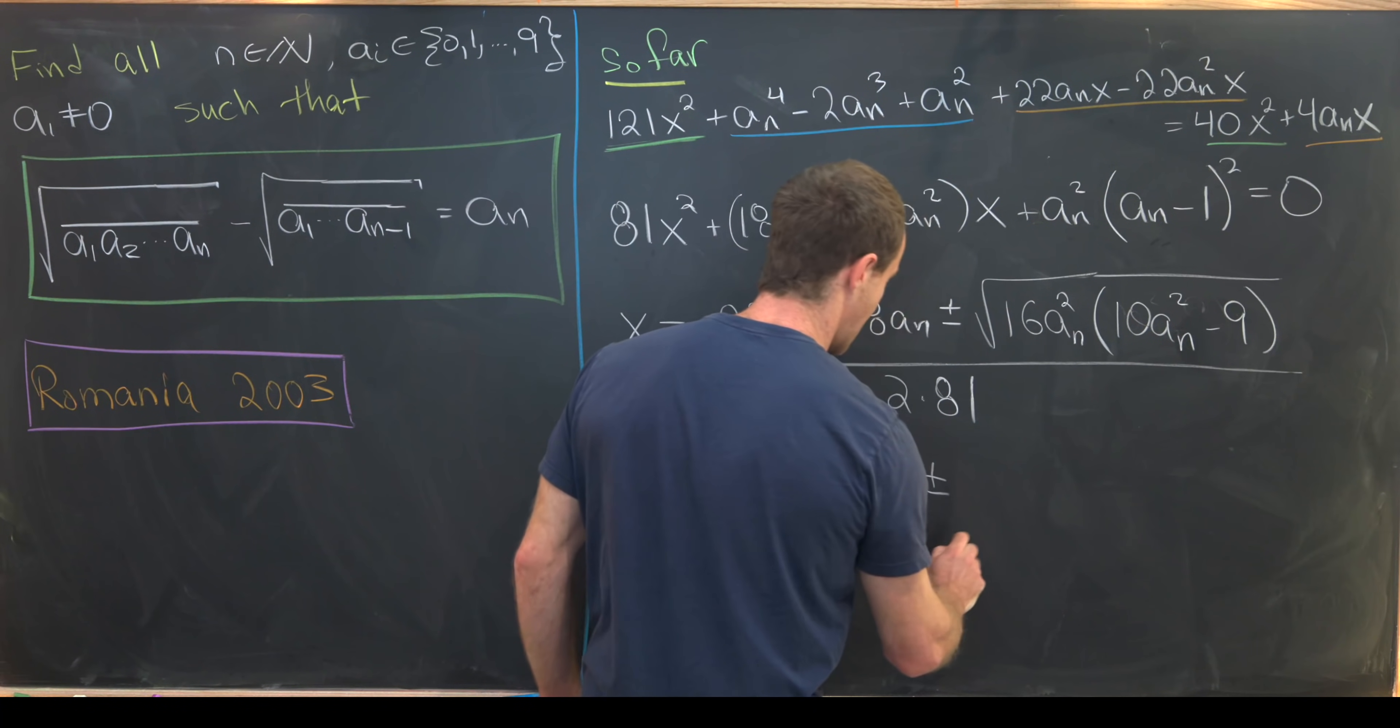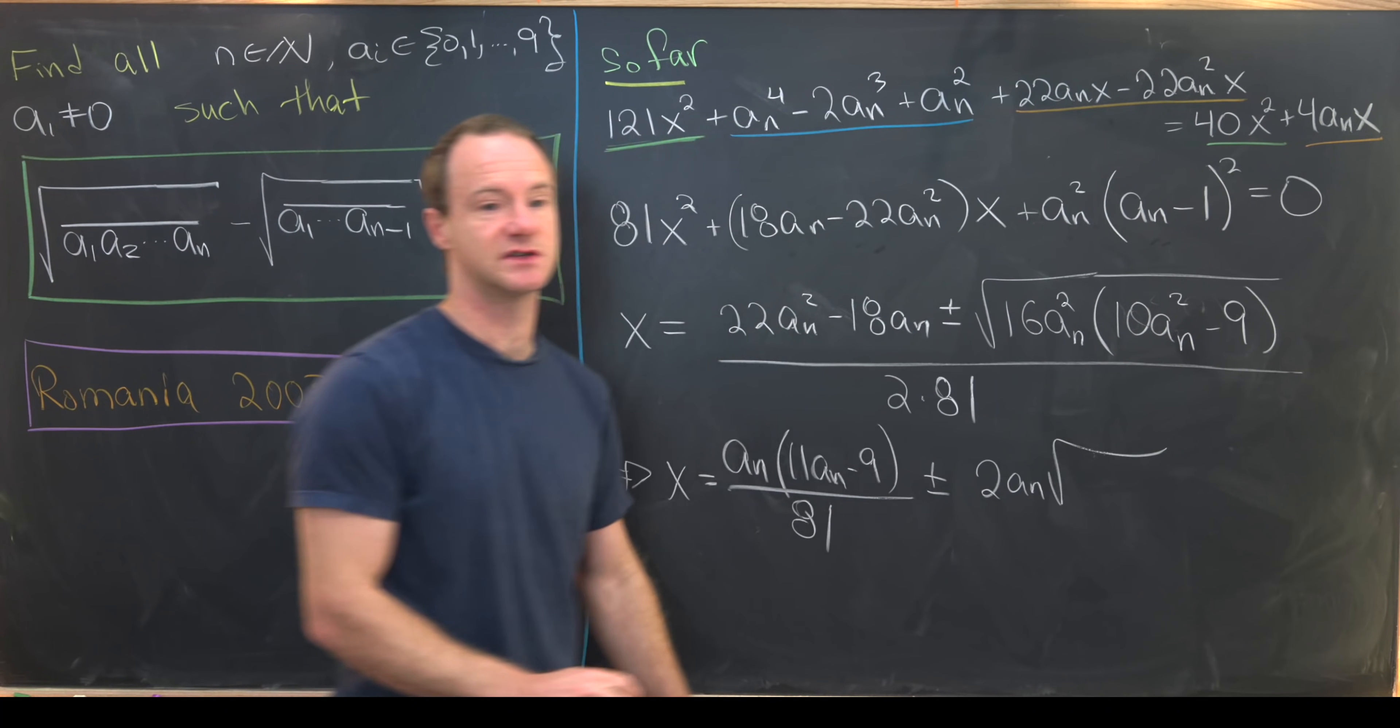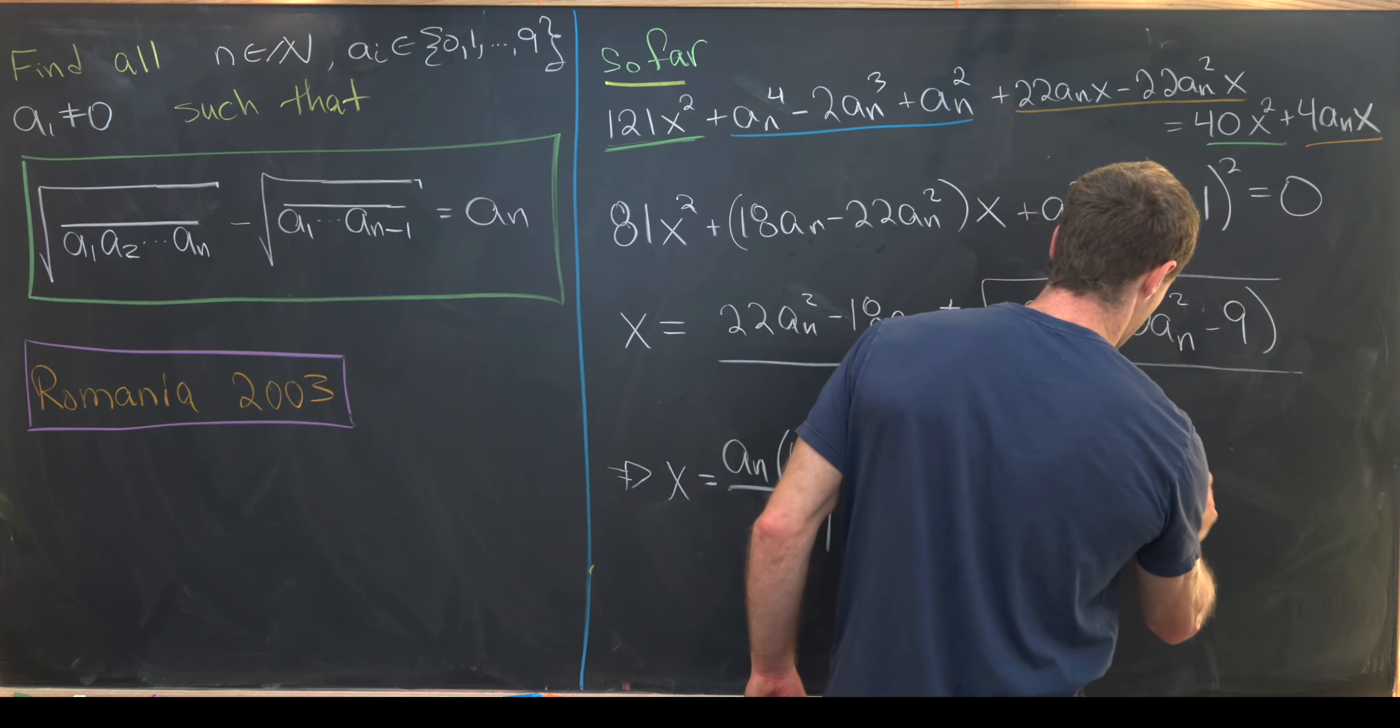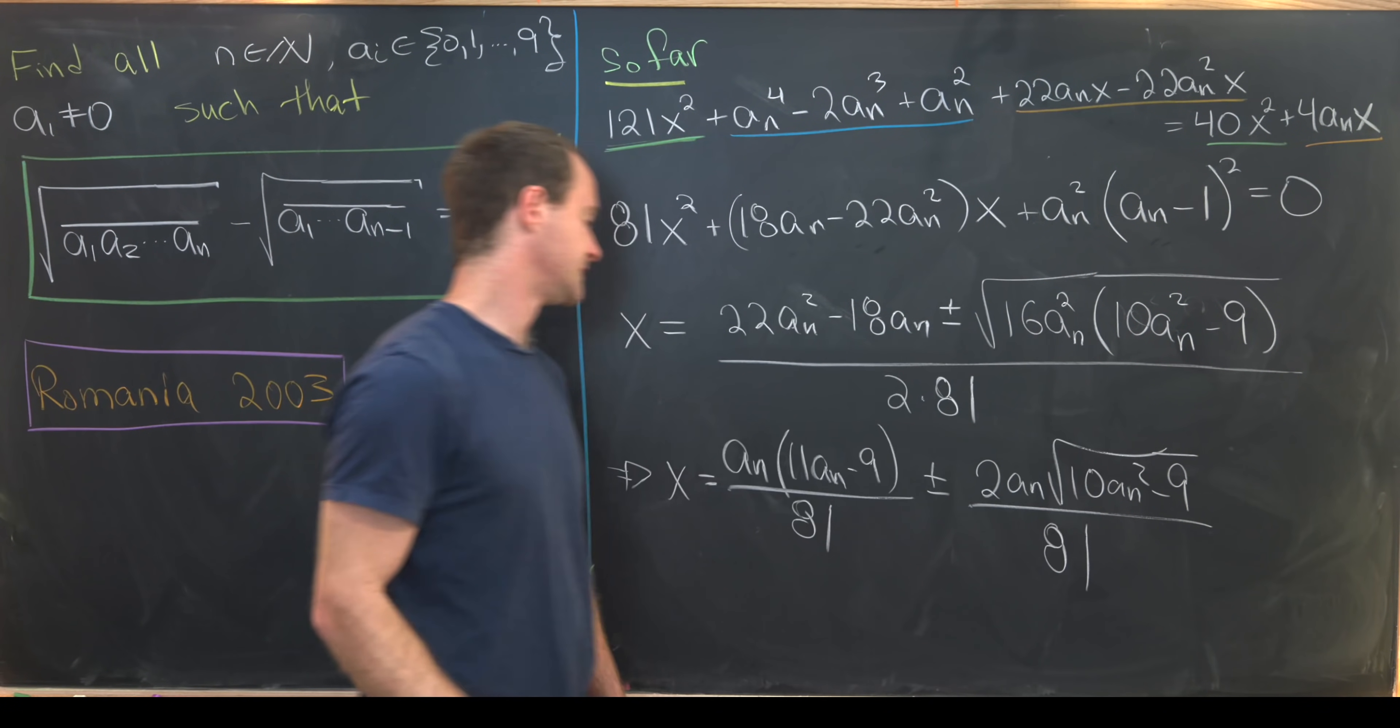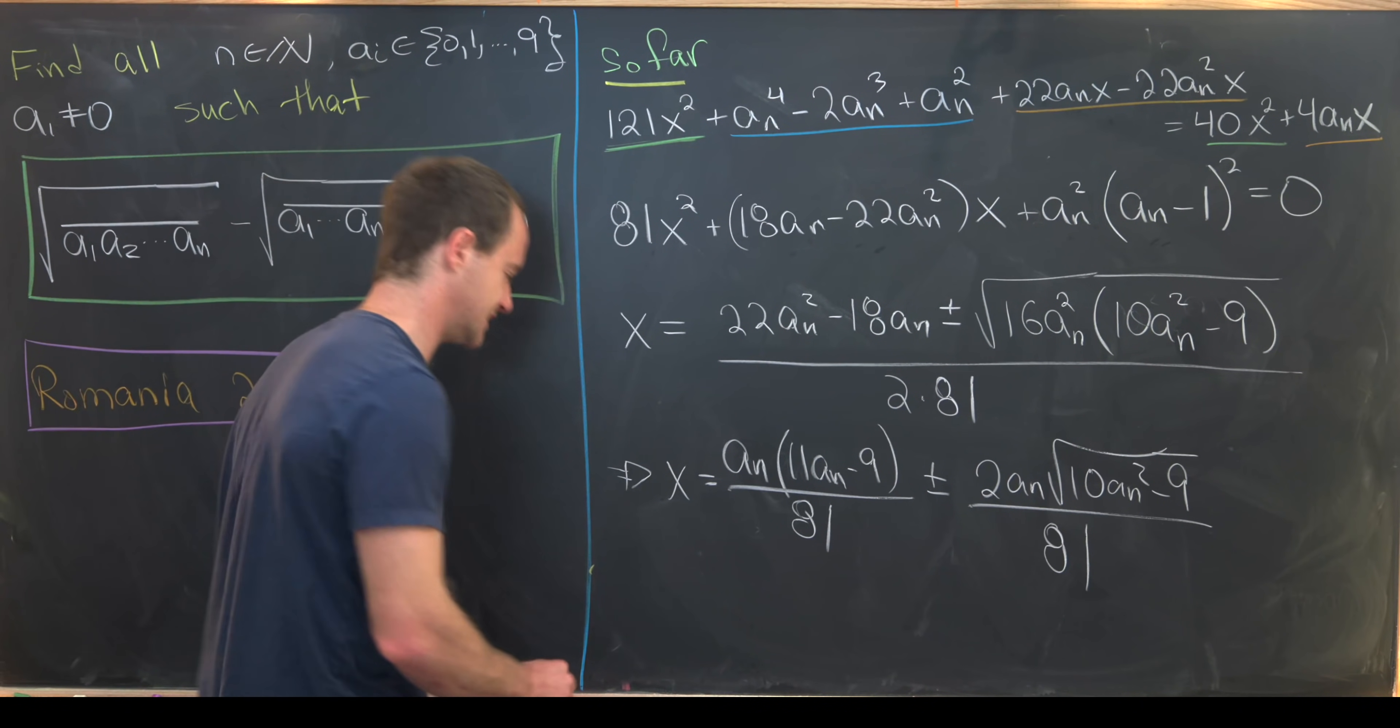And then plus minus 2 times an times the square root of 10an² minus 9 over 81. So again, that's the simplification that can occur. And now we're a little bit restricted.